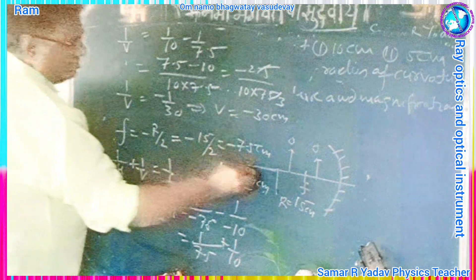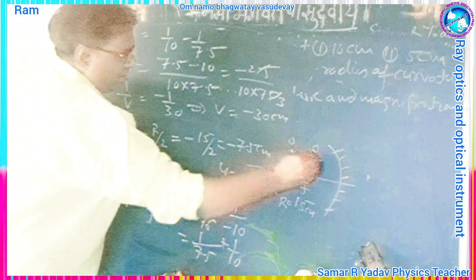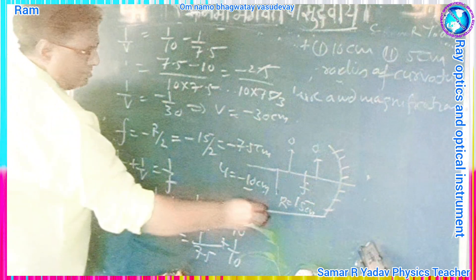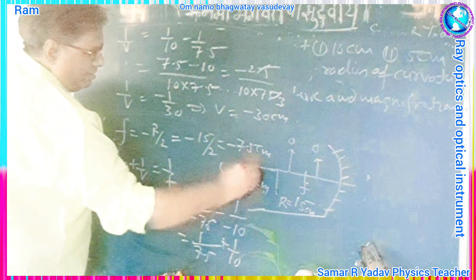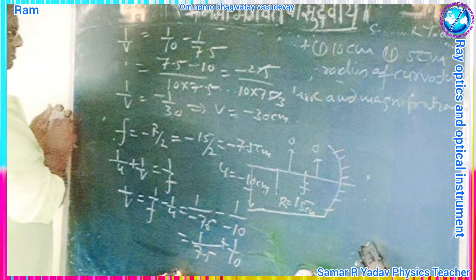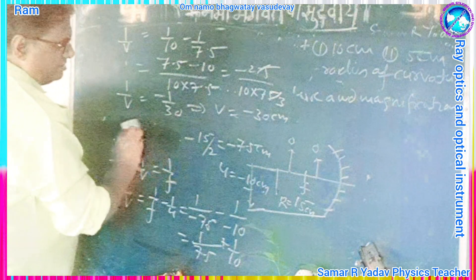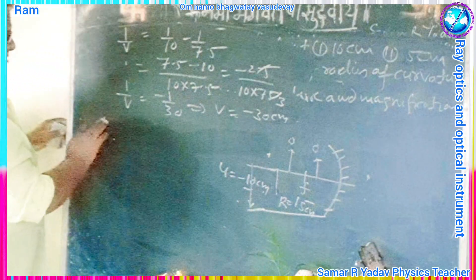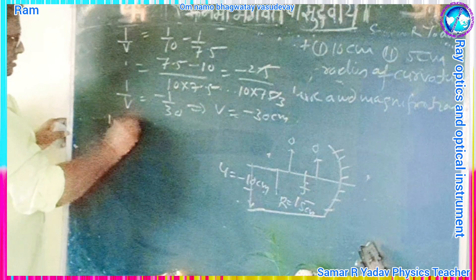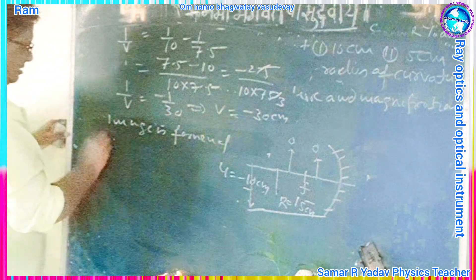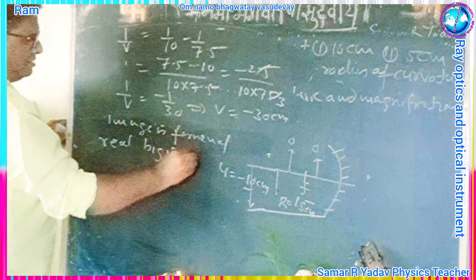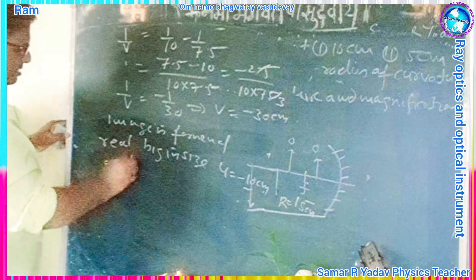So the image will be formed at 30 cm. It is a real image, inverted, and big in size.